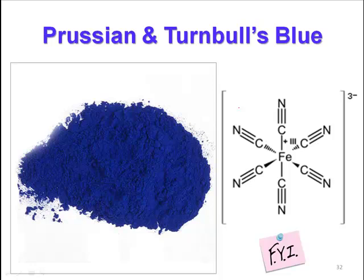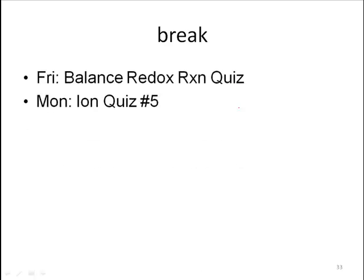This is another striking colored substance containing iron in the middle — iron is found in all sorts of things, including hemoglobin. Here it has carbons and nitrogens around the outside and has a very rich blue color. This particular complex has a three-negative charge. Upcoming: balanced redox quiz, Ion Quiz number five on Monday, and reactions PS7.